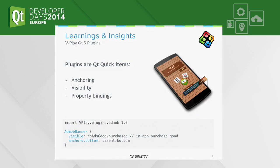All the following examples are actually based on one of our plugins. Our plugins behave like normal Qt Quick items as you are used to. You can set properties like visibility and you can also use position anchoring or property bindings, which are really cool to implement. As a short example, there is an ad banner which is only visible if the in-app purchase "no ads" code is not purchased, and it's anchored to the parent bottom item — in this case, the bottom of the window.